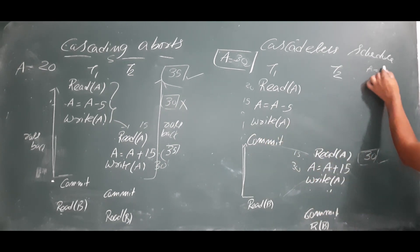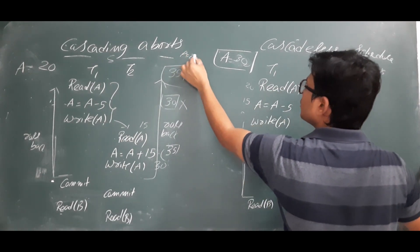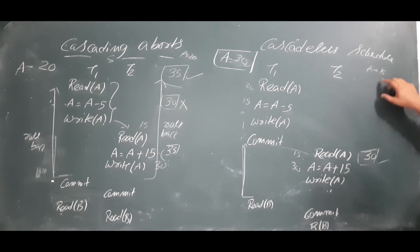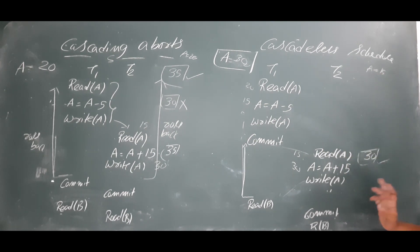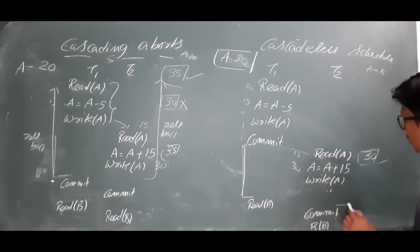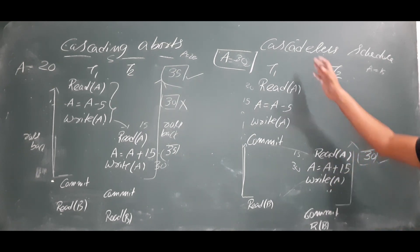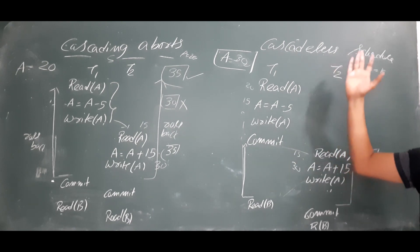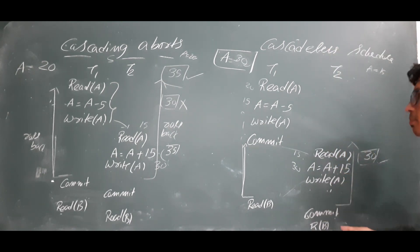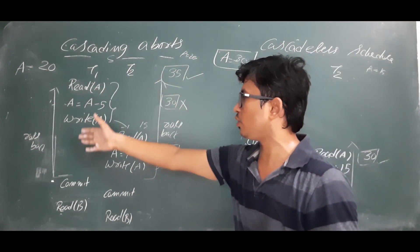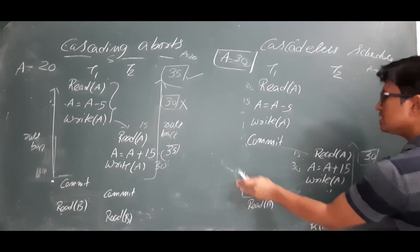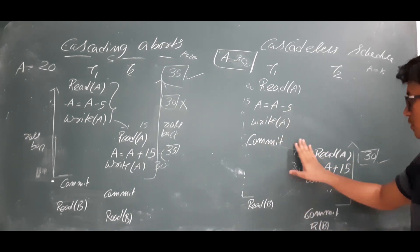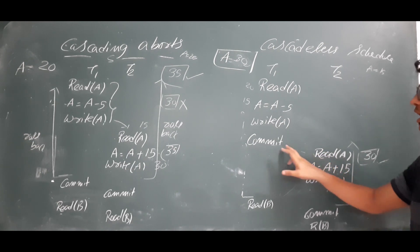In the cascadeless case, the database A value is 15 because it was permanently stored. Whereas in the cascading abort case, the database A value was still 20. Even if transaction one rolls back, transaction two does not need to roll back because it read committed data — A = 15 — and its result of 30 is correct. That is why we call it a cascadeless schedule: you are reading only committed data.